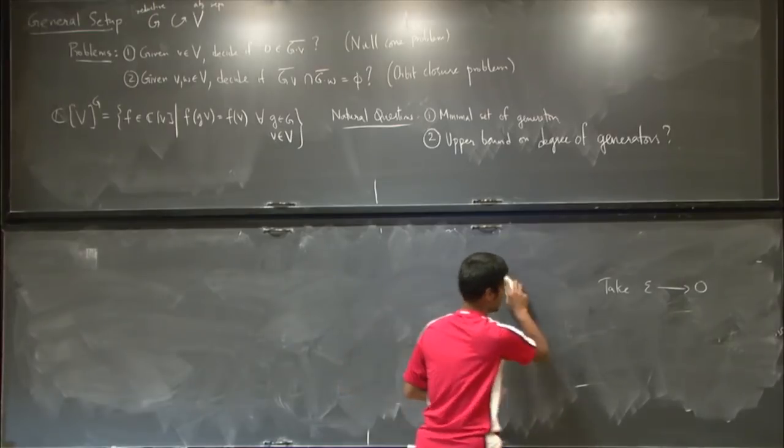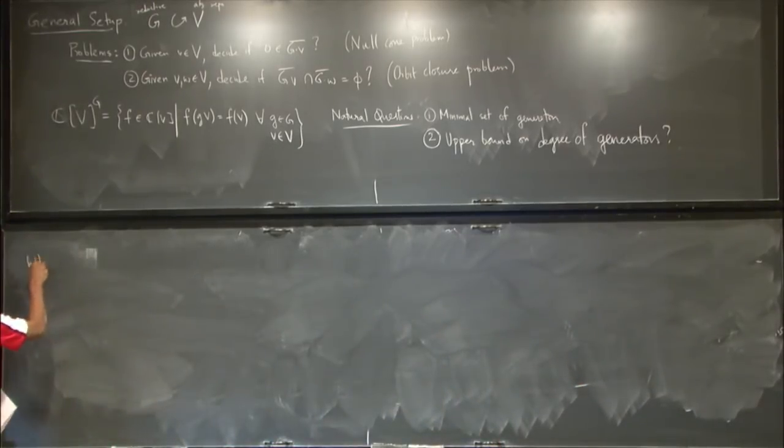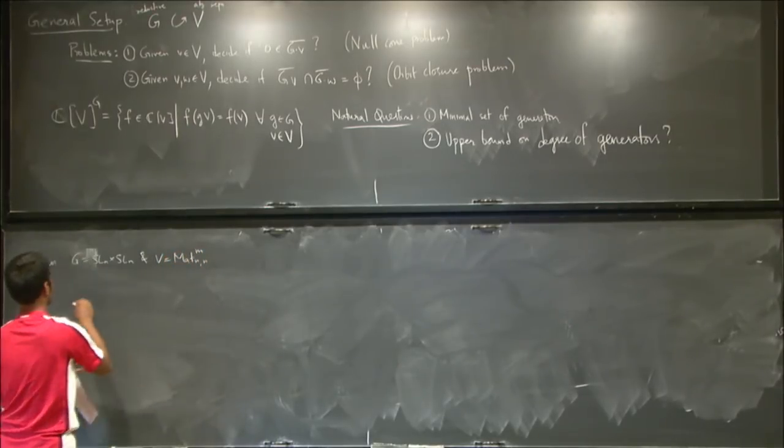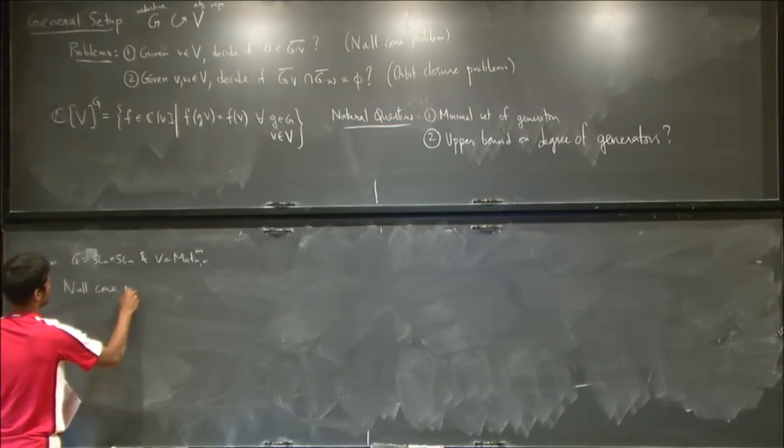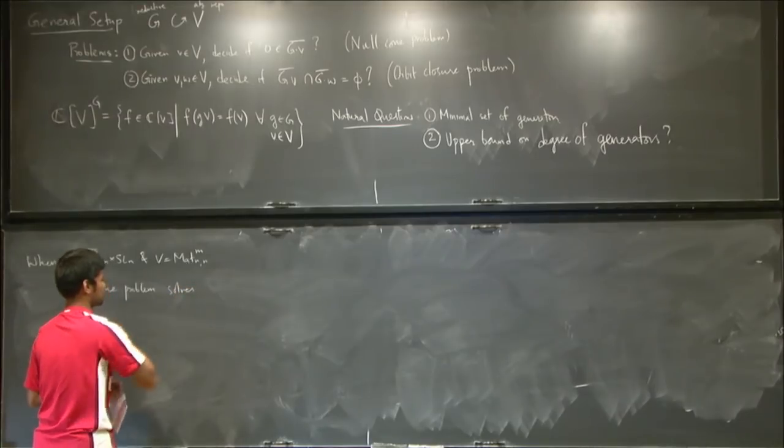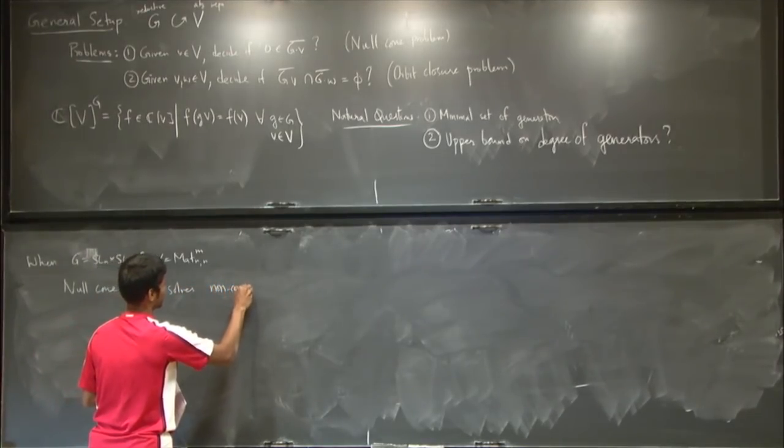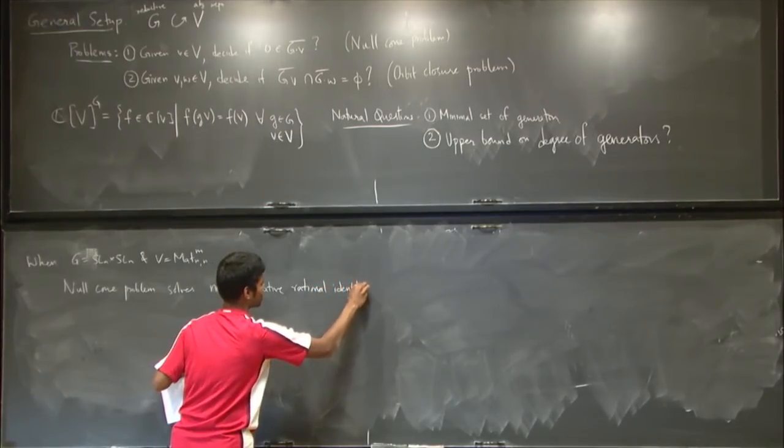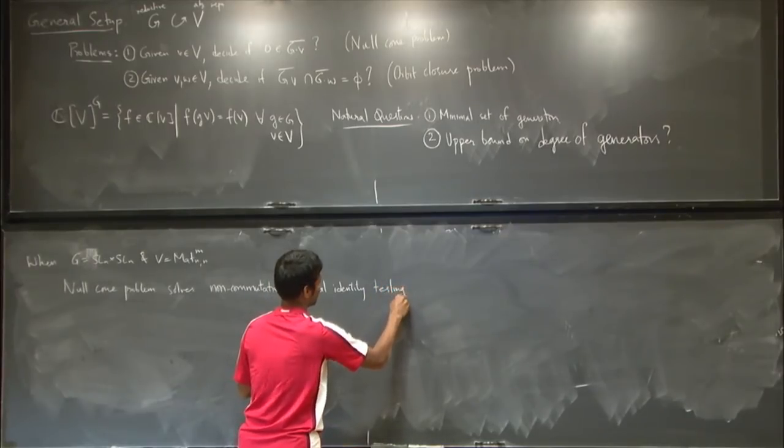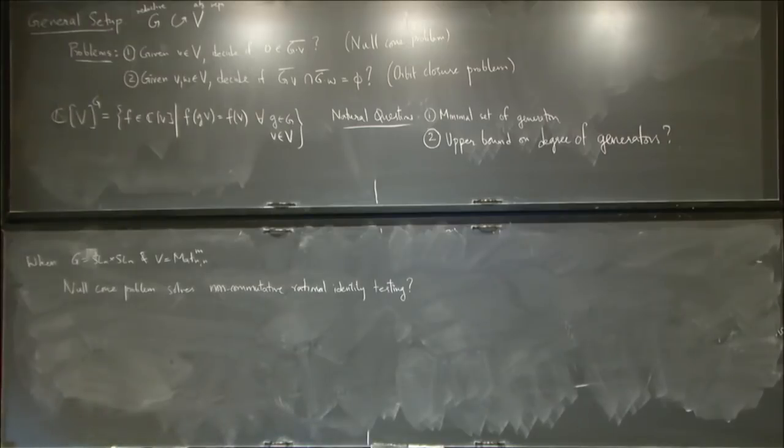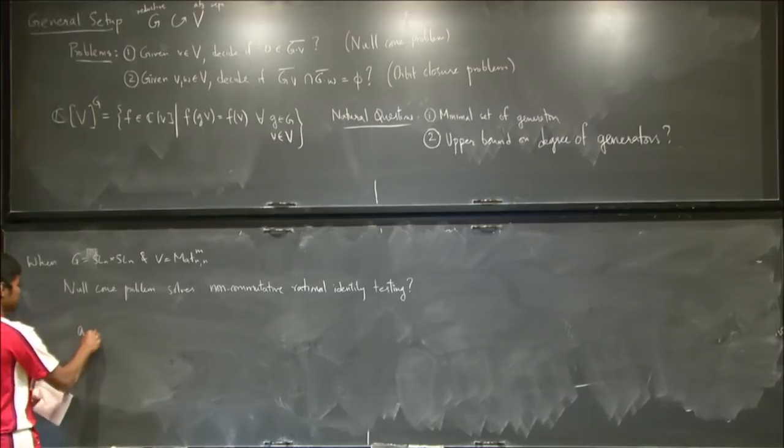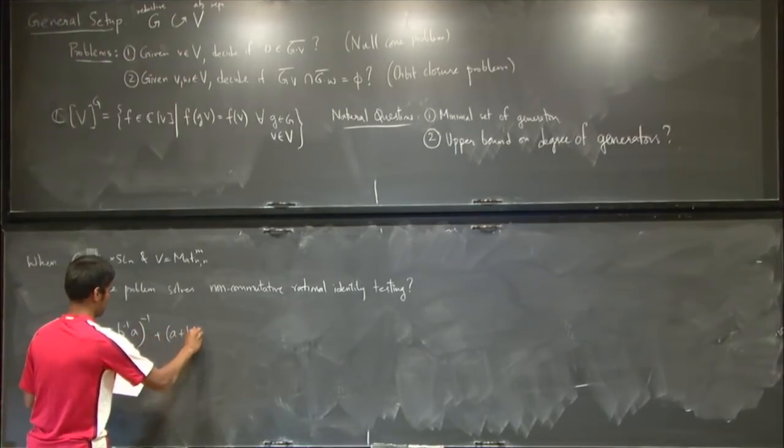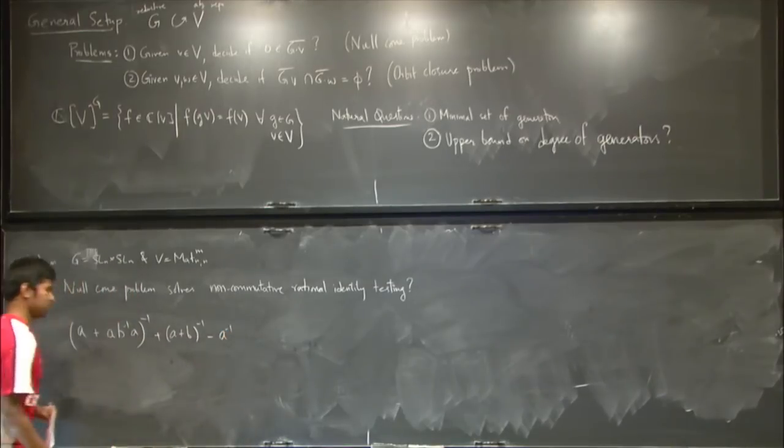So when the group is SLN cross SLN, and the vector space is M tuples of matrices, what is the null cone problem? The null cone problem solves what is called rational identity testing. Maybe I'll be even more specific and say, non-commutative rational identity testing. This is one reason why null cone problem, why these kind of problems can be kind of interesting. So let me first tell you what non-commutative rational identity testing is.